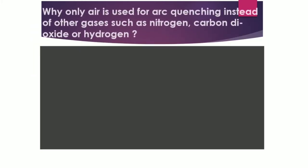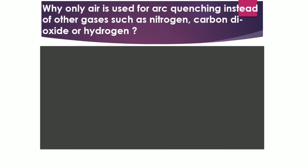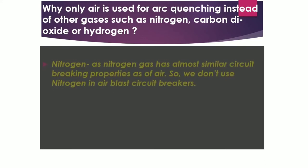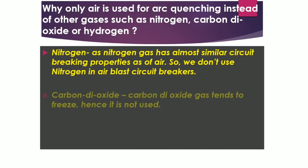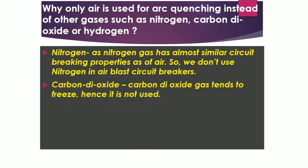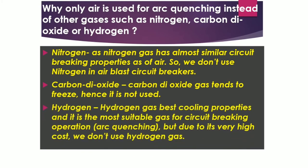In an interview you may be asked why air is used for arc quenching instead of other gases like nitrogen, carbon dioxide, or hydrogen. The answer: nitrogen has almost similar circuit-breaking properties to air, so it offers no advantage. Carbon dioxide tends to freeze. Hydrogen has the best cooling properties and is most suitable for arc quenching, but its cost is very high, so it is not preferred.